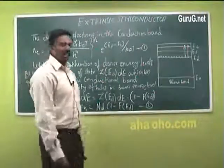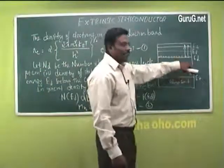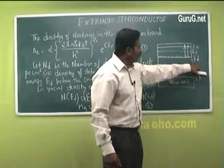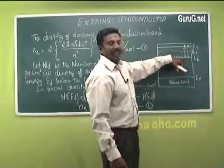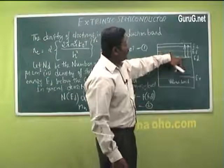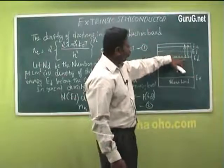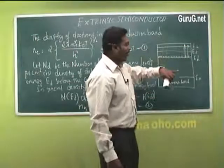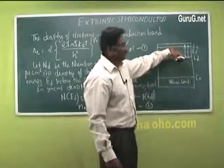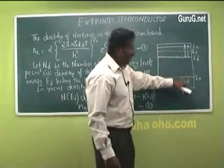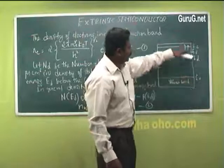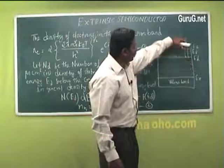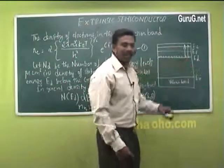For carrier concentration of an n-type semiconductor, in the band structure there is an unfilled valence band and a donor energy level. At 0 Kelvin, electrons occupy the donor energy level. As temperature increases, electrons move from the donor energy level to the conduction band, and also from the valence band to the conduction band, creating holes in the donor energy level.